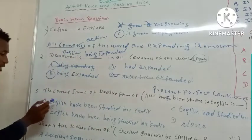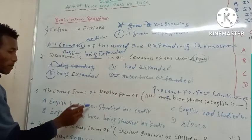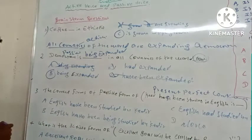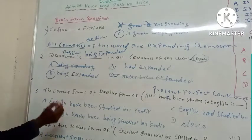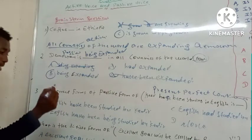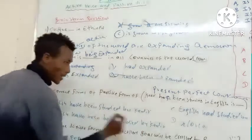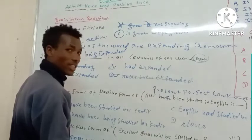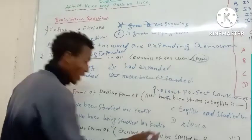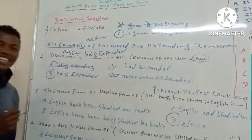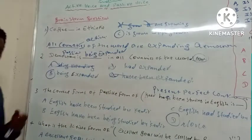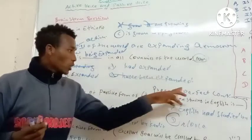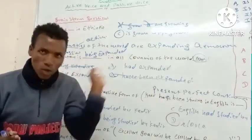The options are: A) English have been studied by Kadir. B) English have been studied by Kadir. C) English had studied by Kadir. D) None. The correct answer is D) None. As I told you in the previous video, Present Perfect Continuous has no passive form.